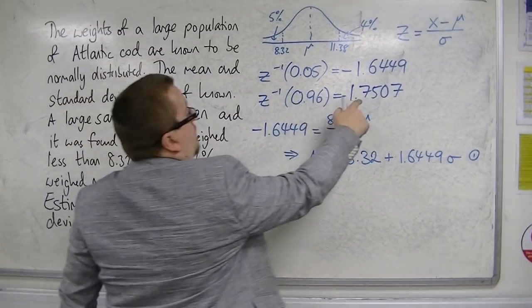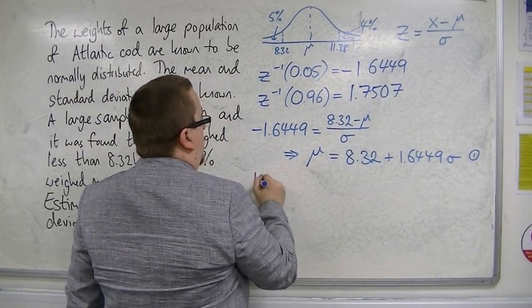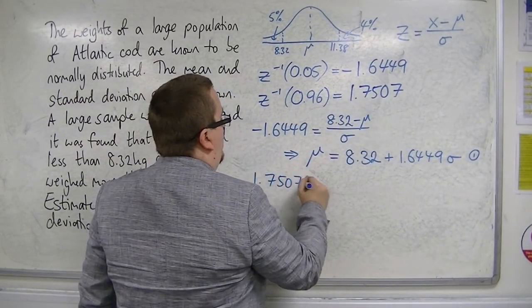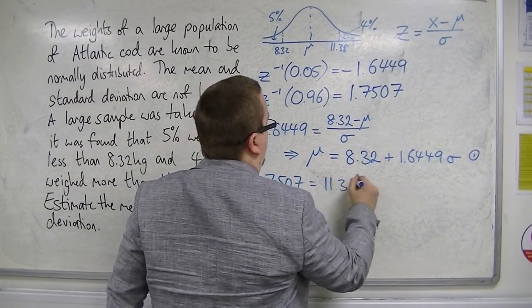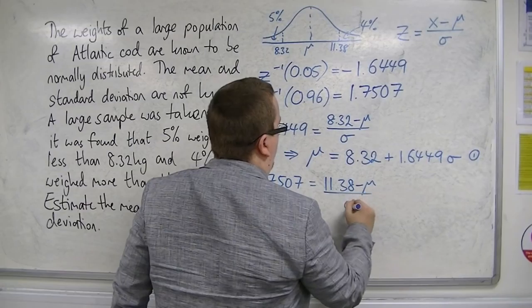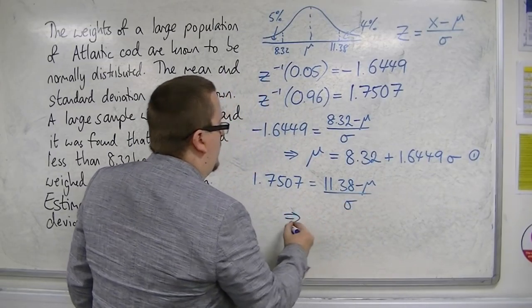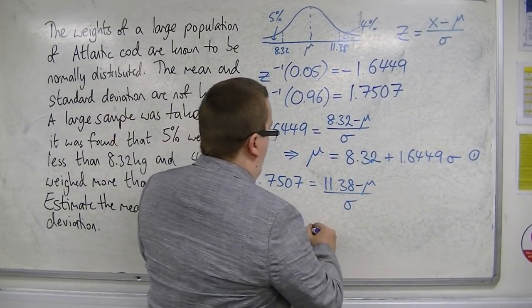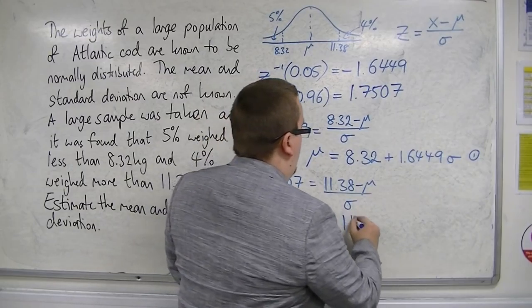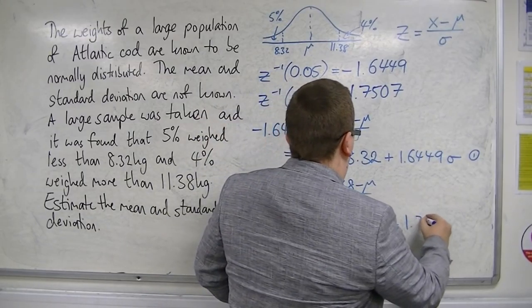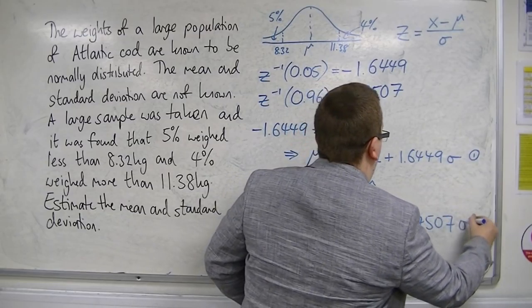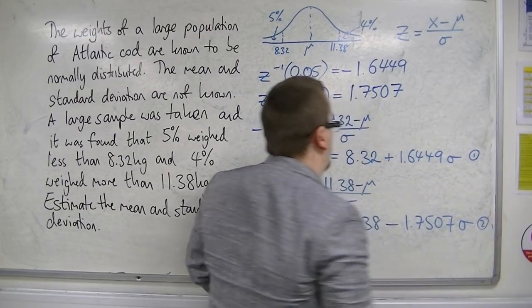The second equation, which I'm substituting in this one, so we've got 1.7507 is equal to 11.38 take away the mean over the standard deviation. So, if I reorder this one, we're going to have the mean is equal to 11.38 take away 1.7507 times sigma. That's equation 2.